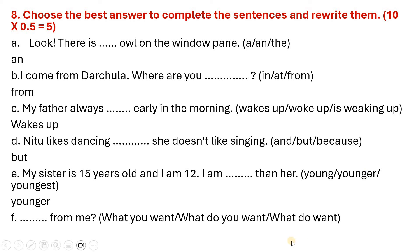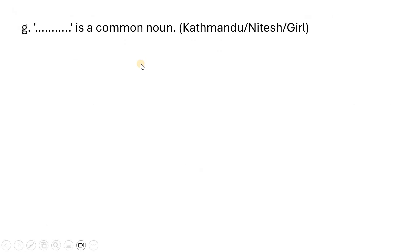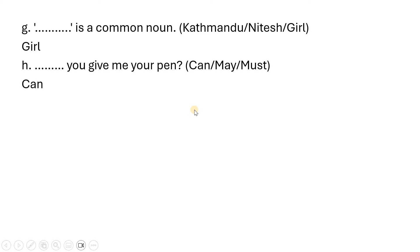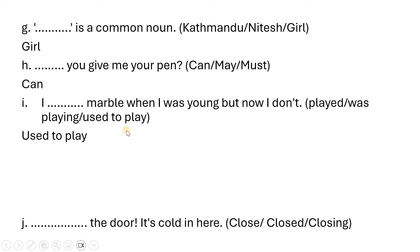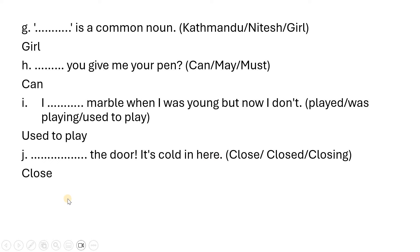Continuing the answers: What do you want from me? The common noun here is 'goal.' Can you give me your pen? My brother used to play when I was young but now he doesn't — so the answer is 'used to play.' Color the door. This is all about the solution and answers to the model question paper for class 6. I will upload solutions to other model questions for grade 6. Thank you for watching.